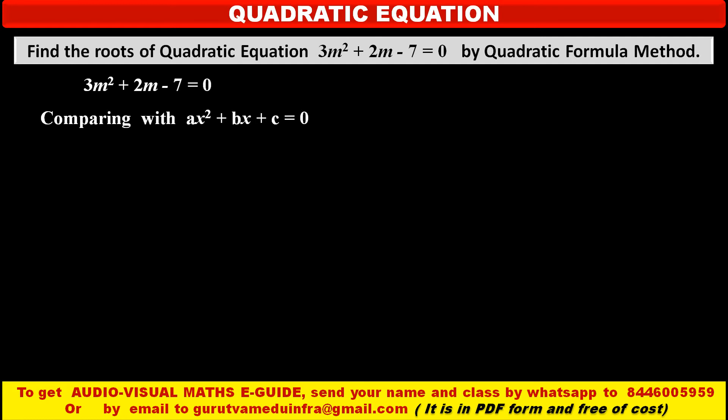So, comparing and equating corresponding terms, we get: a is equal to 3 (coefficient of m squared), b is equal to 2 (coefficient of m), and c is equal to minus 7 (constant term).